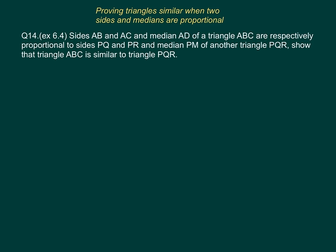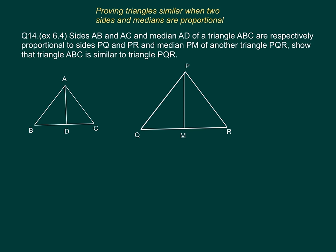Let us look at the following question. Here we shall be proving triangles similar when two sides and medians are proportional to each other. Sides AB and AC and the median AD of triangle ABC are respectively proportional to the sides PQ, PR and the median PM of triangle PQR. Show that triangle ABC is similar to triangle PQR.